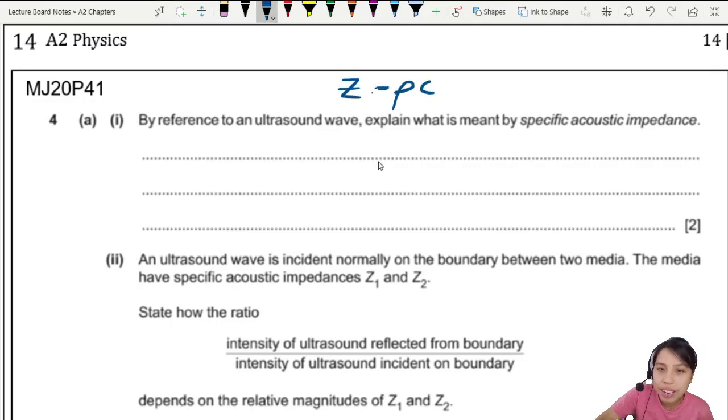So we know the equation is Z equals to rho times C. We're going to mention that as our answer. So we say they multiply together. So we call that the product of... what is this? Density of who? Density of some medium.